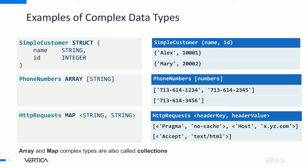The third type on the slide is the map data type. A map is nothing but a collection of key-value pairs, where each element is a key-value pair and you have a collection of such elements. The key is usually a primitive type, and the value can be a primitive or complex type. In this example, both the key and value are of type string. Looking at the sample data on the right, we have HTTP requests where the key is the header type and the value is the header value. For instance, on the first row we have key pragma with value no-cache, key host with value some hostname. On the second row you have key accept with value text/HTML.